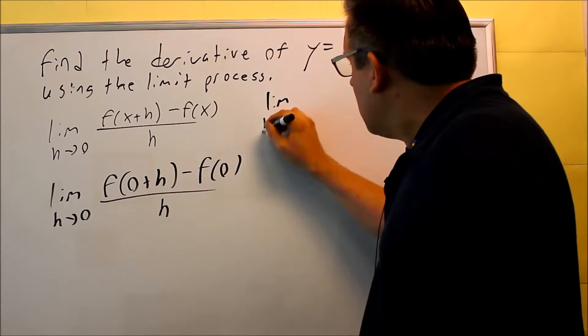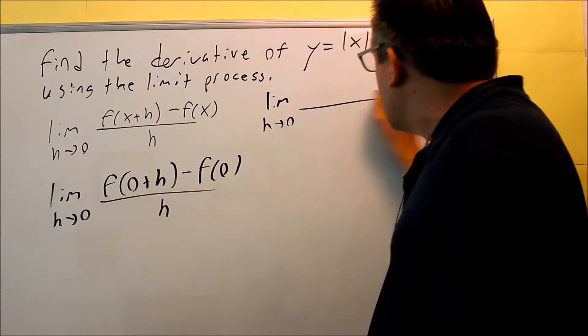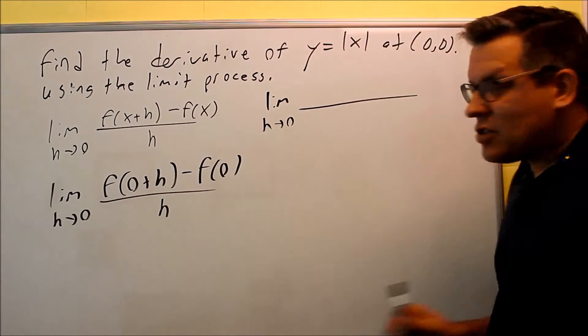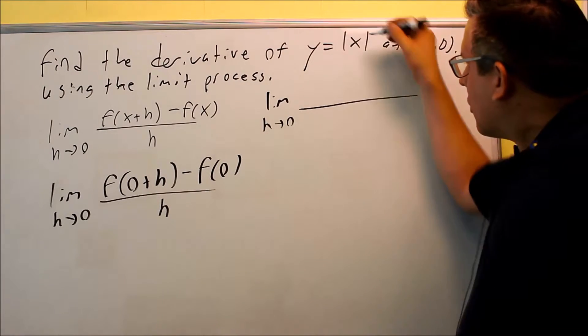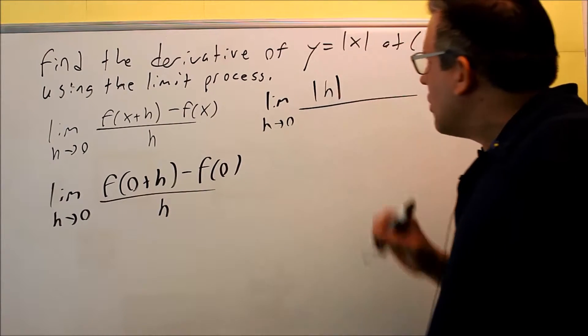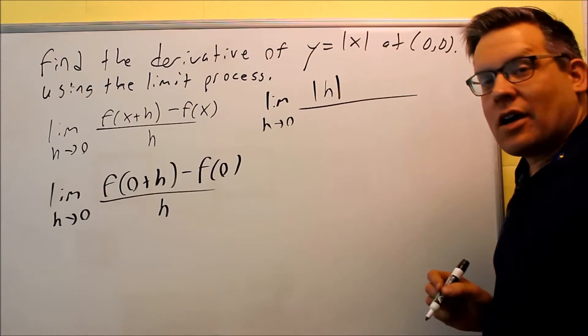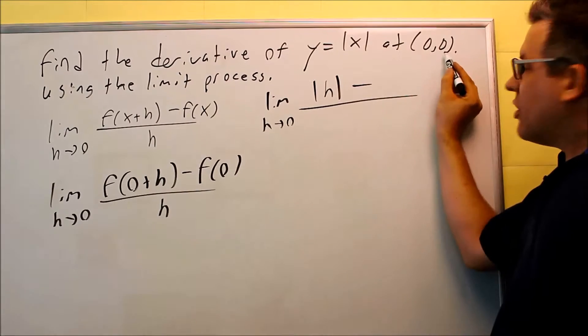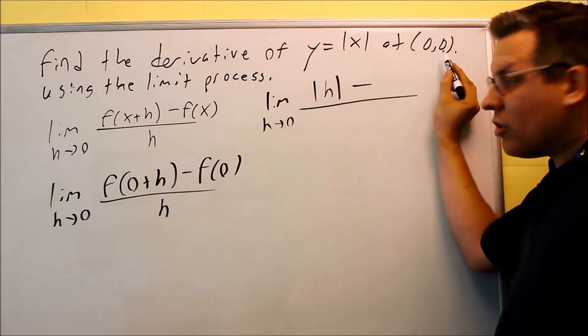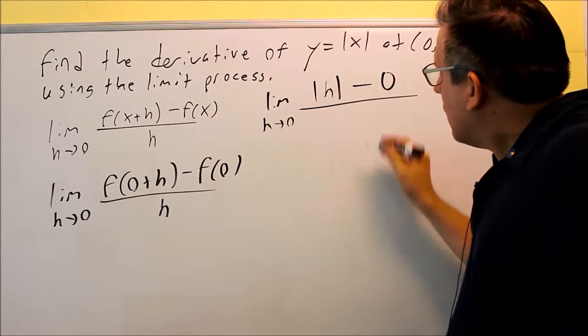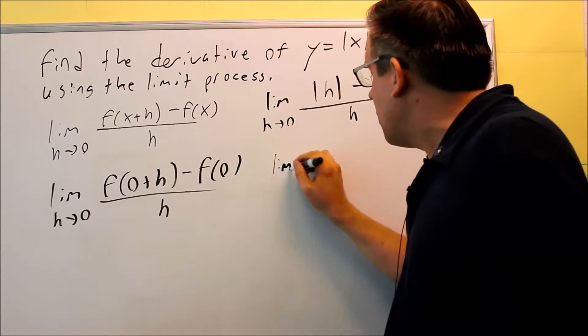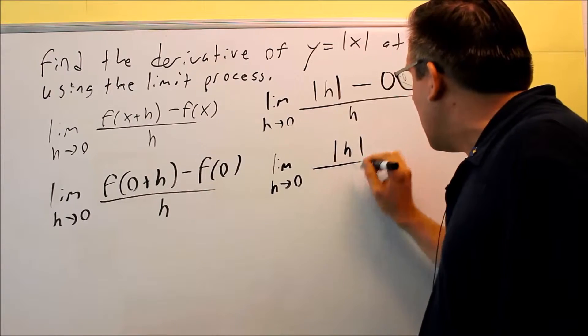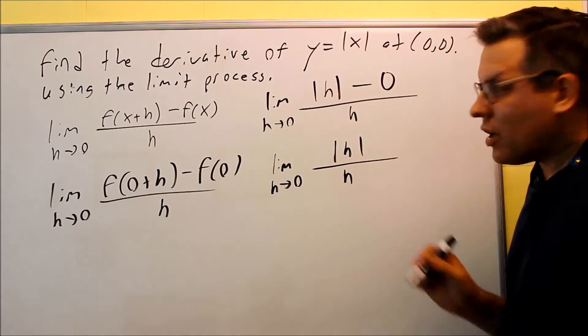Now we have to evaluate each of those. If I do F of 0 plus h, essentially that's just saying we're going to do F of h. That means I'll just put an h in there in place of the x. Then we're going to do minus F of 0. F of 0 is the y value here. F of 0 is 0, and I have h down below. So, I have the limit as h goes to 0 of absolute value of h over h. That's what I get as a result.